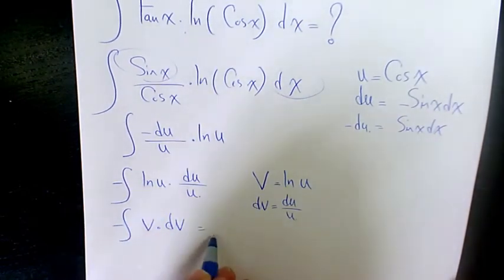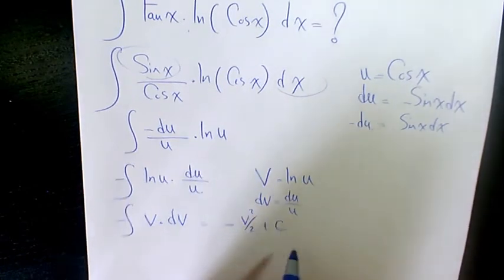Which is going to be, when you integrate it, negative v squared over 2 plus a constant number.